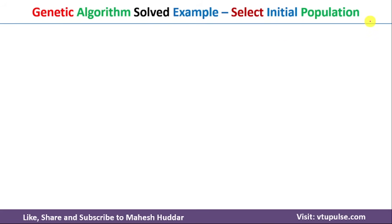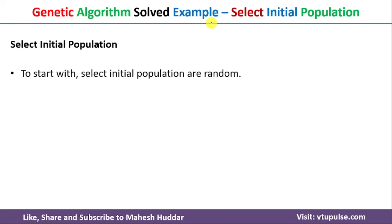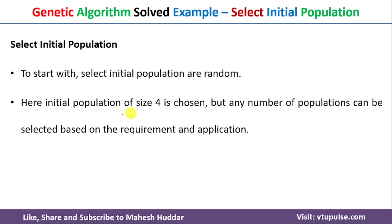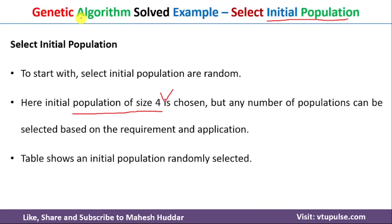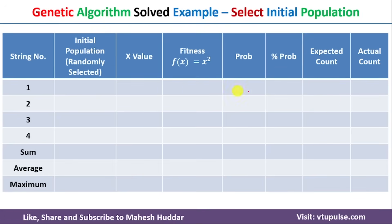The next step is to select the initial population from the available set of solutions. We need to set the population size — for this problem I have set it as 4, meaning we need to select four solutions to form the initial population. The best way to select them is randomly from the available set of solutions.